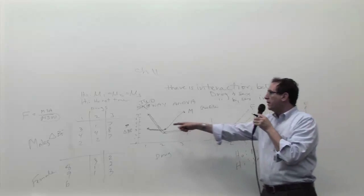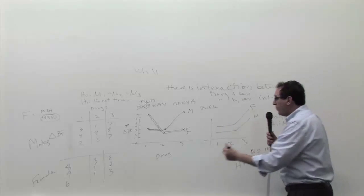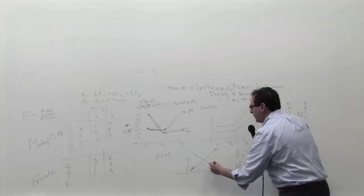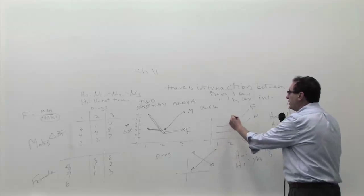When the lines are parallel, or roughly parallel, you say there's no interaction. When they cross, for example, this would be a case of extreme interaction. They're crossing. In this case, there would be interaction. Here, there's no interaction.